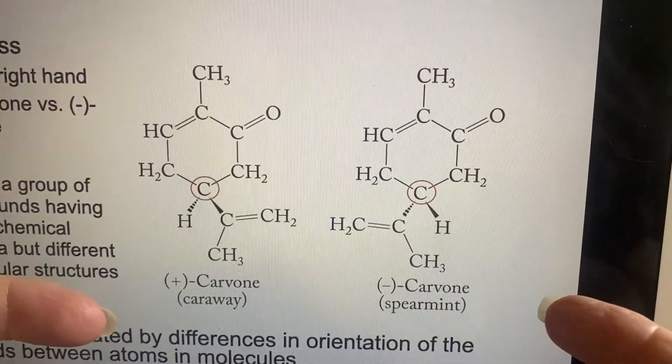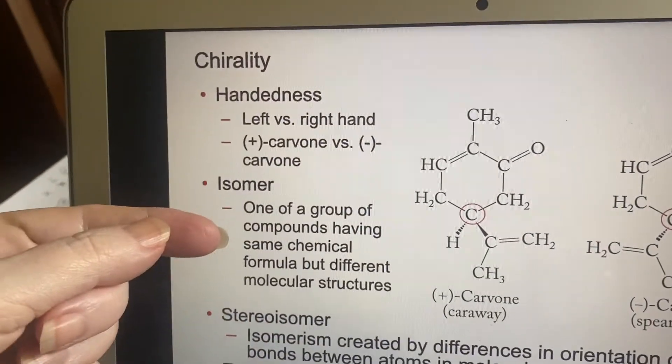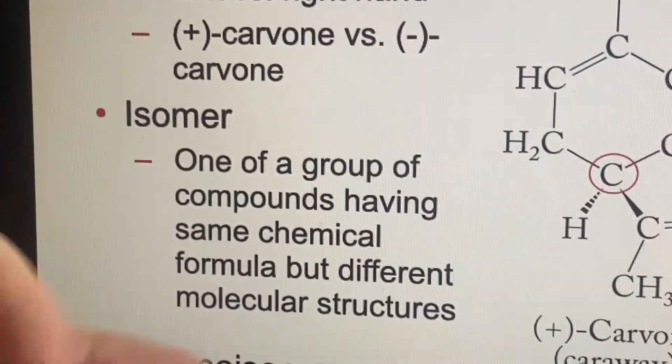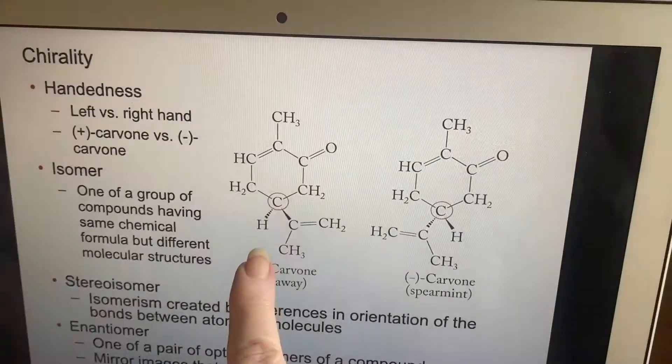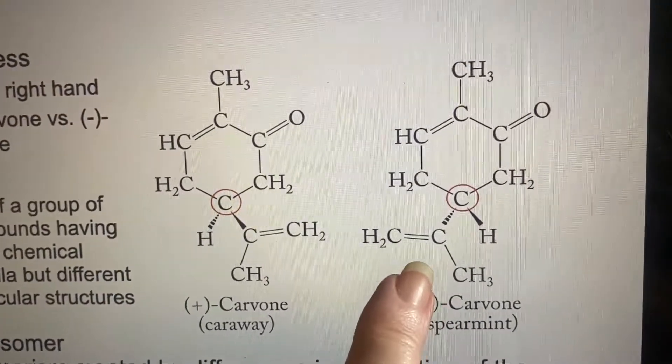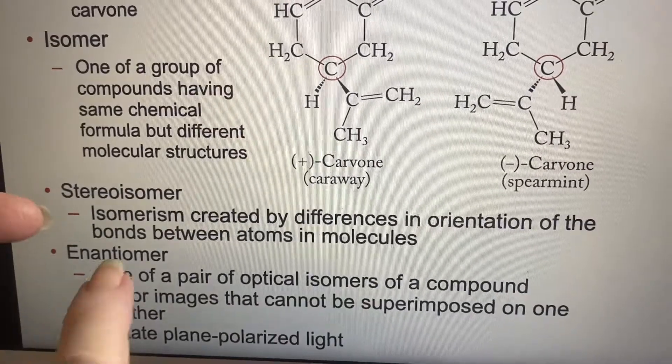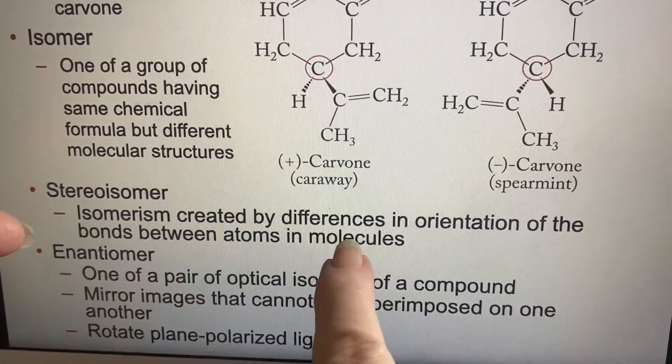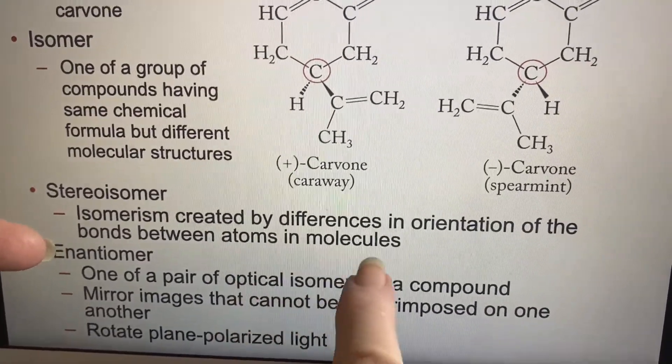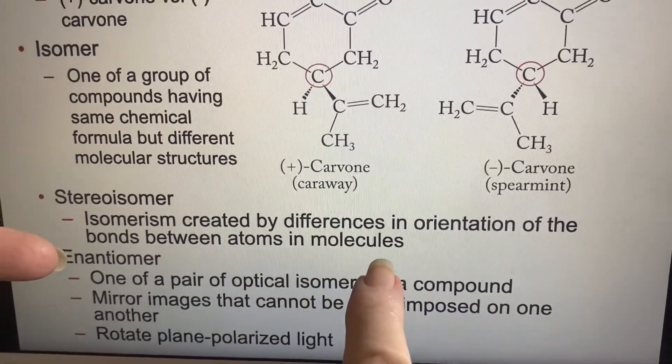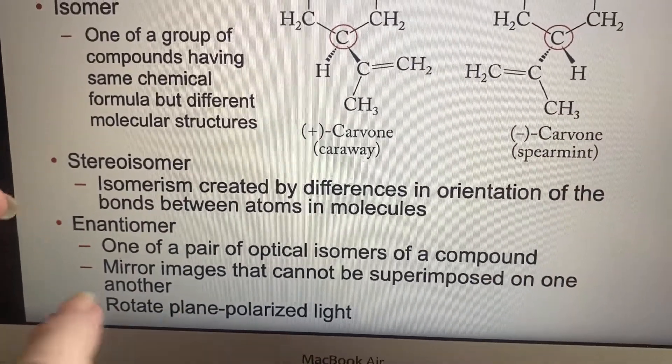So these differences do have an effect. They are examples of isomers. It's any compound that has the same chemical formula, but it's put together differently. This is a very subtle distinction, so it has its own name of this chirality. And isomers, there's different types of isomers. A stereoisomer, that's differences in orientation of the bonds between atoms in the molecule. So that's about what direction they're going.